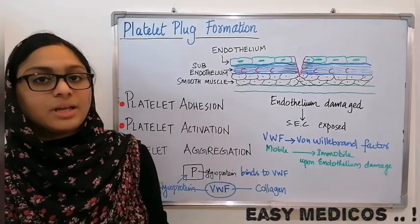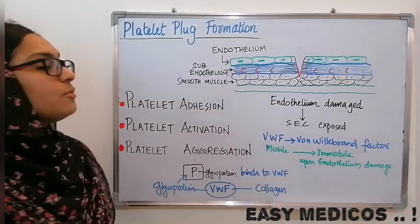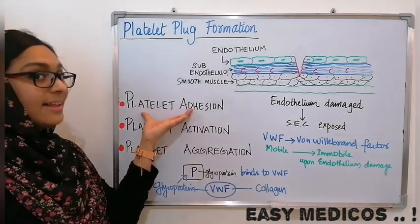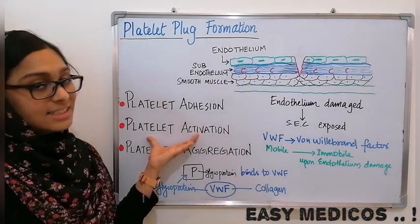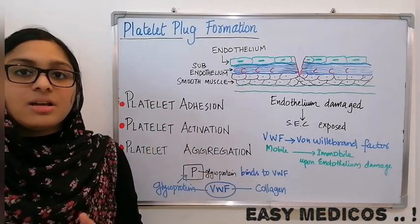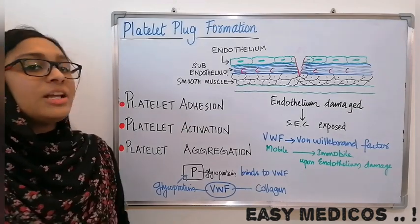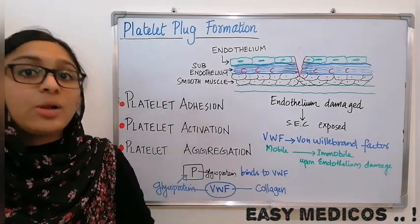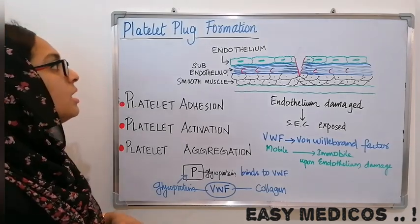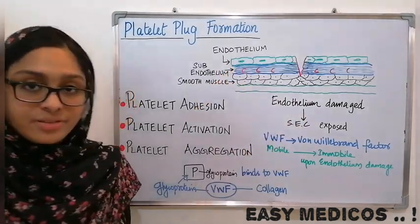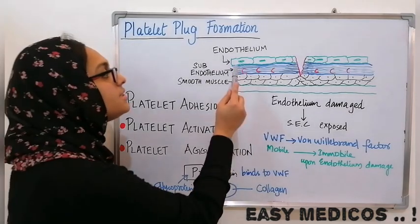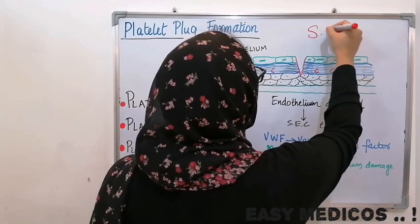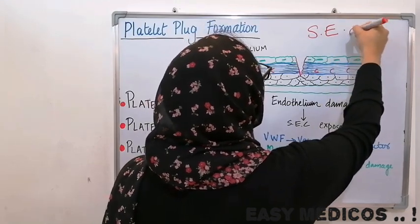Then comes vasoconstriction. And the next part is platelet blood formation, which has three steps: adhesion, activation, and aggregation. Upon injury, when the endothelium gets damaged, a sub-endothelial layer — specifically sub-endothelial collagen — is exposed.